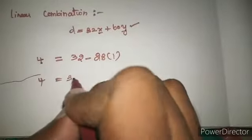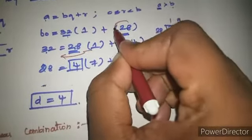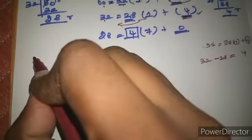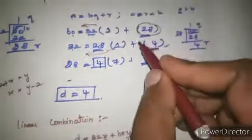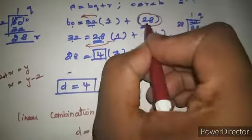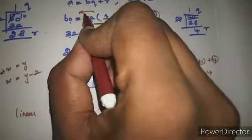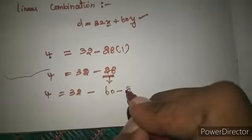Next: 4 equals 32 minus 28 times 1. Now check remainder 28. Find 28 on the left side. 28 equals 60 minus 32 times 1. So substitute: 28 value is 60 minus 32 times 1.